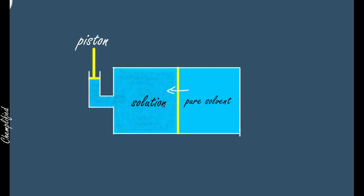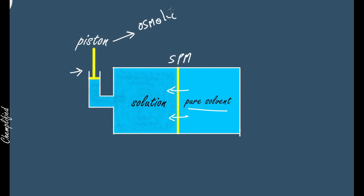The pure solvent will move towards the solution. What we want is to stop this flow of pure solvent towards the solution. So what we do is put a piston and apply external pressure. As we apply the external pressure, we reach a certain pressure at which the flow of pure solvent particles towards the solution stops through the semi-permeable membrane — and this is your osmotic pressure, the pressure applied through the piston.